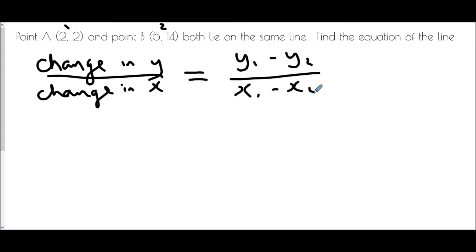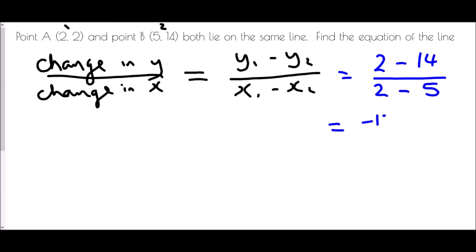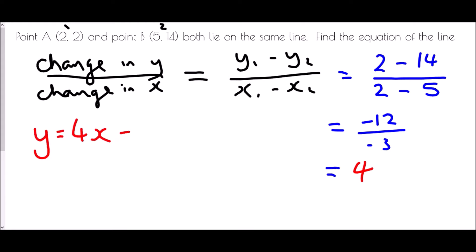The y-coordinate of the first point is 2 and of the second is 14. The x-coordinate of the first is 2 and of the second is 5. So we have 2 minus 14 over 2 minus 5, which is negative 12 over negative 3. A negative divided by a negative is positive, and 12 divided by 3 is 4. So straight away I can say this has equation y equals 4x plus something.